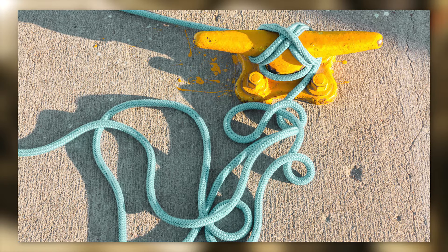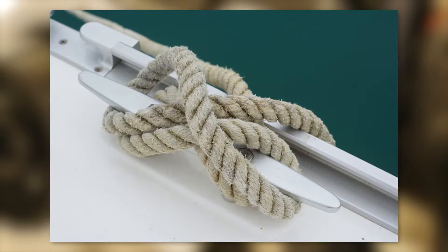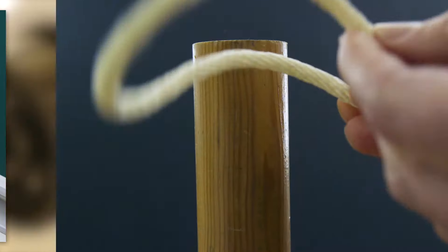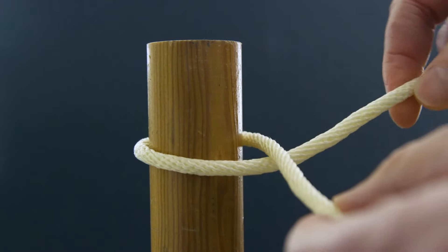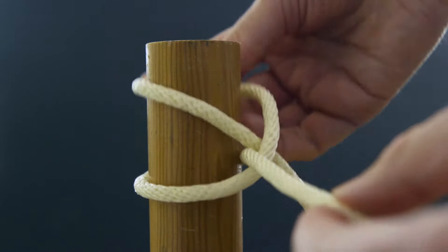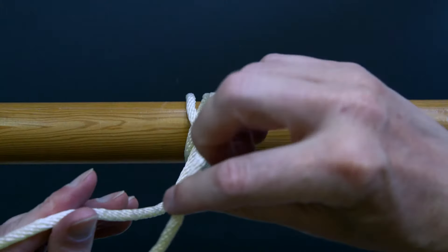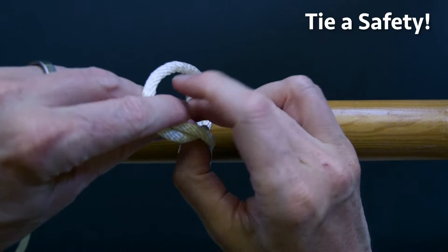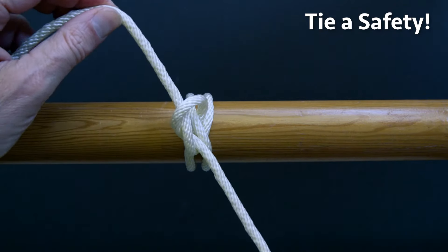This means under load the clove hitch just gets tighter and digs into the pipe more. If you've ever seen a boat dock at a pier, you've seen someone take its line and loop it twice over the cleat. That's a clove hitch. That's a way to tie it over the end of a pipe. Though it's tight, it's always a good idea to tie a safety, an extra overhand knot, just in case.